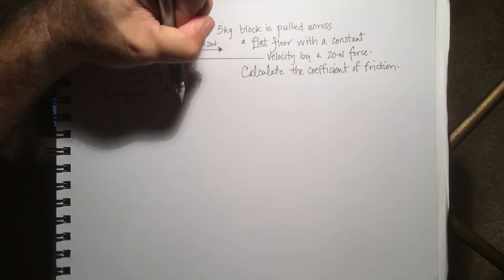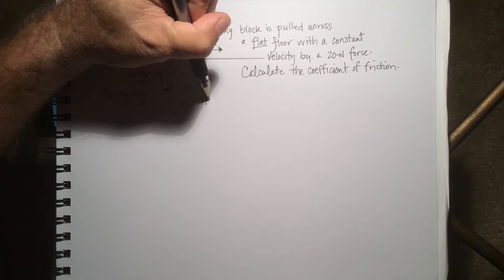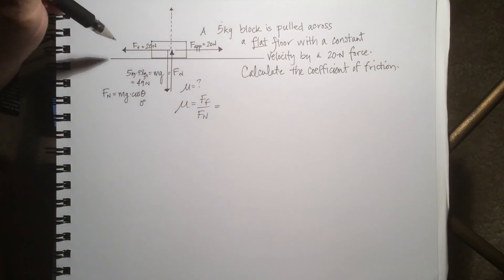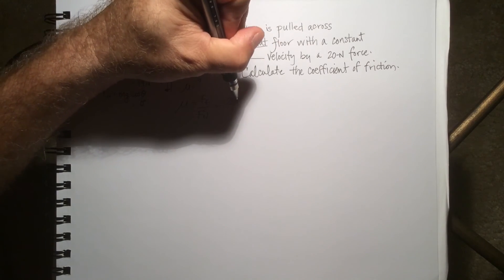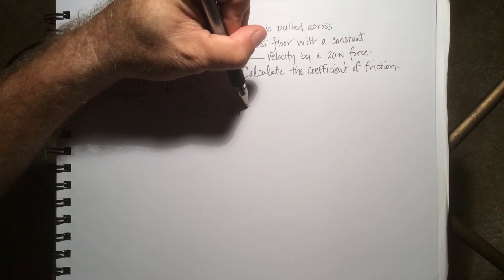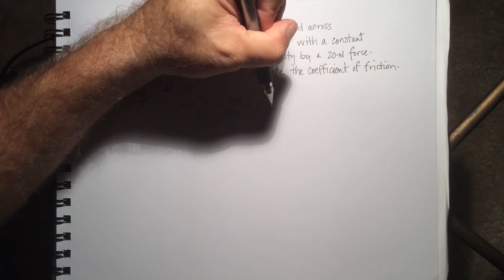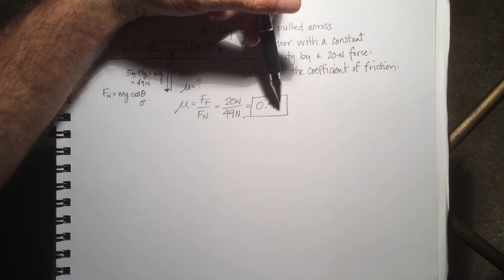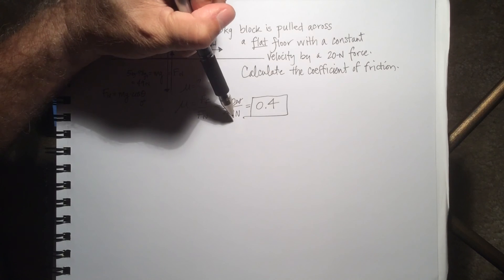The coefficient of friction mu is friction force over normal force, which is equal to 20 Newtons divided by 49 Newtons, which is equal to 0.4. Notice that there are no units on this because the Newtons cancels with the Newtons.